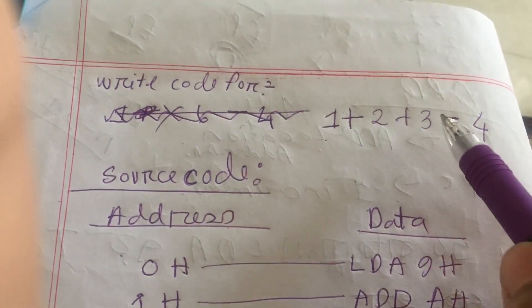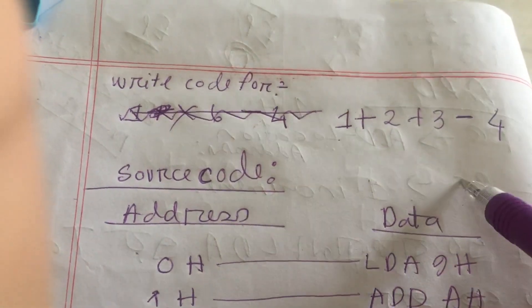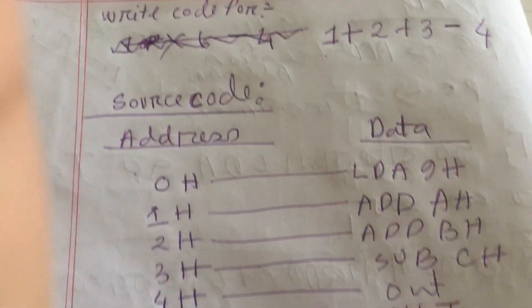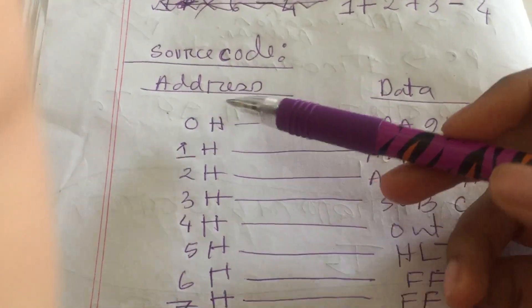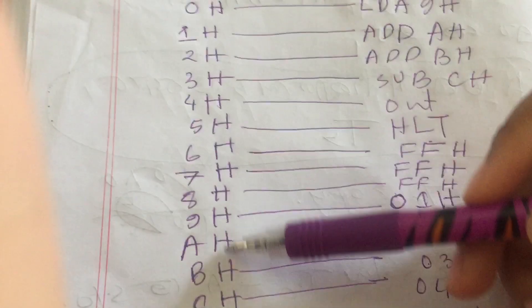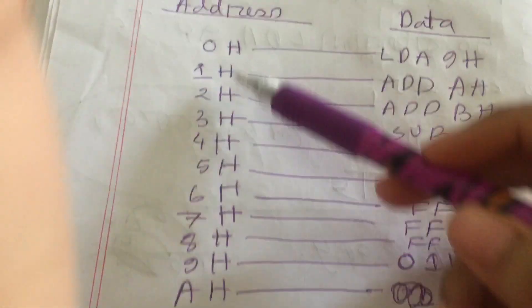Like 1 plus 2 plus 3 minus 4, how we will write the source code for it. To write the source code, first you have to arrange the addresses like from 0 to, as it is in hexa.